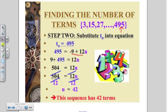Next, I'm going to move all the numbers over to one side. So the negative 9 moves over to one side. It becomes positive 9. That gives me 504 equals 12n. I want to get rid of the 12 in front of the n. So I'm going to divide both sides of the equation by 12. And that gives me a final answer, n equals 42. That means that this sequence has 42 terms, 42 terms.